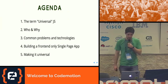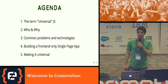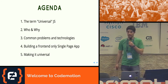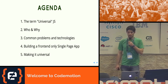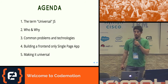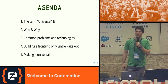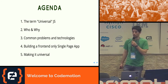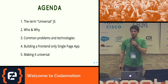Going to our agenda today: we are going to talk about what it means when we say Universal JavaScript, which companies are already using it and why, what are the common problems as soon as you start to implement it in your application, which technologies you can already use to achieve this goal, and then we are going to actually build a very simple single page application and transform it into a Universal JavaScript application.